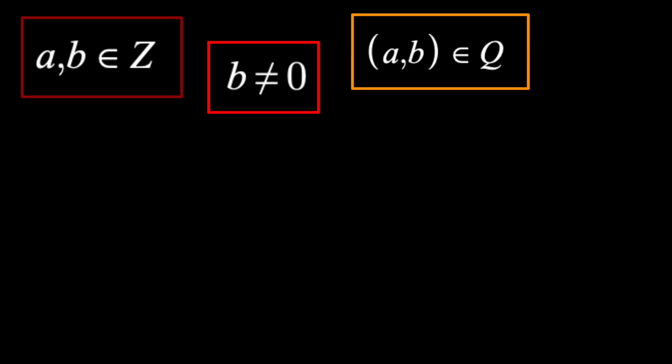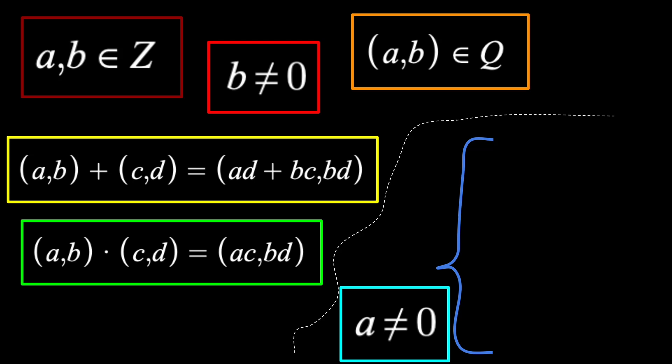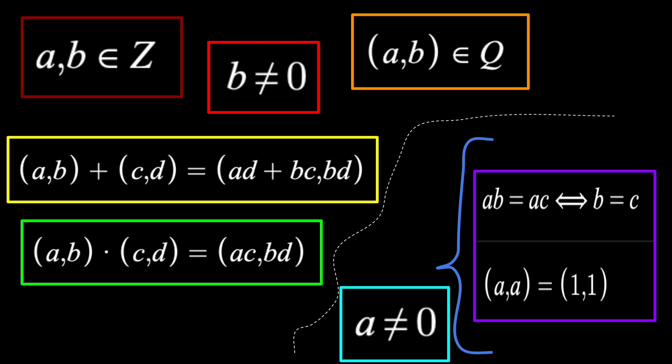Then, there's the abstract version. Let a and b be integers that are part of this ordered pair. Here's addition, here's multiplication, and don't forget that when a is not equal to 0, a times b equals a times c if and only if b equals c, and a divided by a is equal to 1 divided by 1.